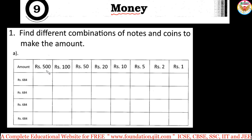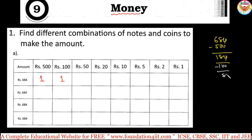For example, take 1 note of 500 rupees — that accounts for 500. Remaining is 684 minus 500, which is 184. From 184, take 1 note of 100 rupees; now 84 remains. Take 1 note of 50 rupees, leaving 34. Then take 1 note of 20 rupees and 1 note of 10 rupees, totalling 30, leaving 4. For 4, take 2 coins of 2 rupees. This is one combination.